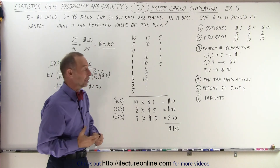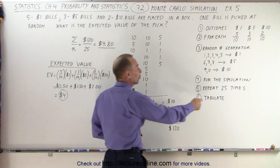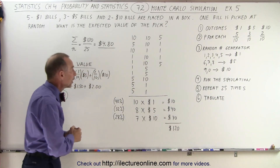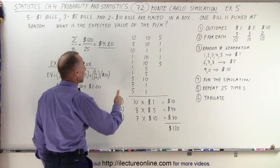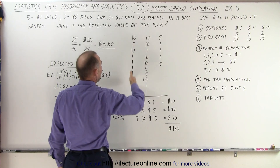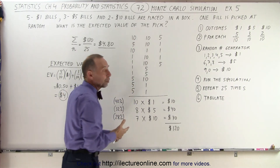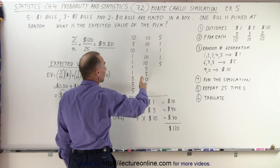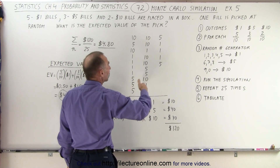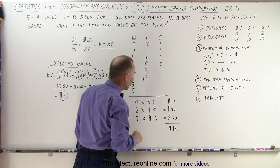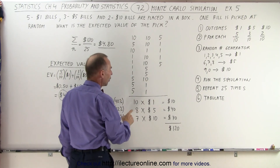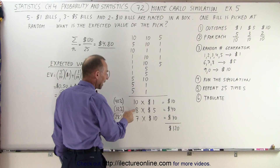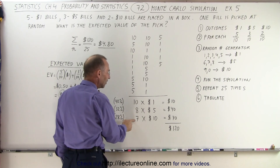Then we run the simulation 25 times, and then we'll tabulate the results to see what we have. So here's what we ended up getting. At first, it looked like we had a lot of tens and fives, way more than we would expect. Then we still had more tens and fives than ones, more than we would expect, but then all of a sudden the tide somewhat turned. When we add up all the bills that were a one dollar bill, we ended up with ten of those, eight five dollar bills, and seven ten dollar bills.